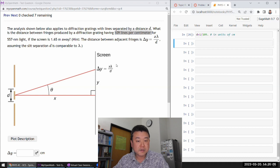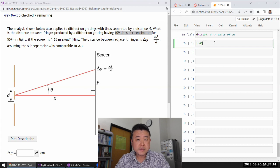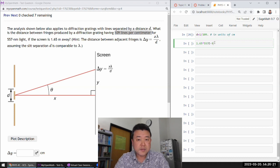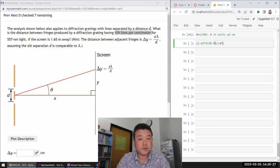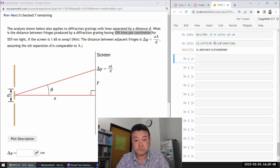X is the distance which they've given us as 1.65 meters, times the wavelength 557. Let me convert everything to meters, basic SI unit, times 10 to the minus 9 meters. All of that divided by d, which I need to convert to meters from centimeters - so 10 to the power times 100. That should be delta y in meters.